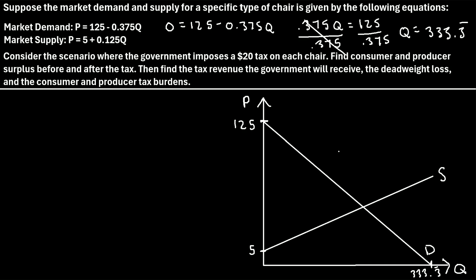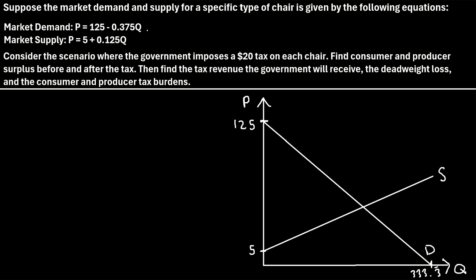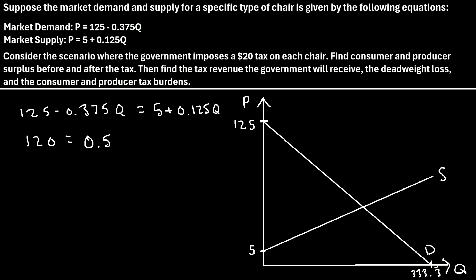Now let's first find the consumer surplus and producer surplus before the tax is implemented. To figure that out, we need to find the market equilibrium quantity and price — this intersection point. We do that by setting the two equations equal to each other and solving for Q. So we get 125 minus 0.375Q is equal to 5 plus 0.125Q. Subtracting 5 and adding 0.375Q to both sides gives 120 is equal to 0.5Q. Dividing both sides by 0.5, our market equilibrium quantity is 120 divided by 0.5, which is 240.